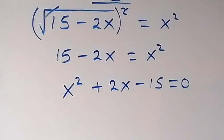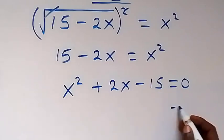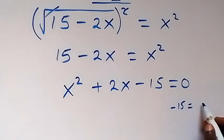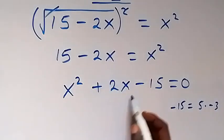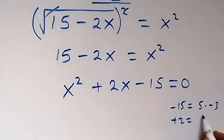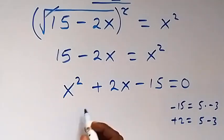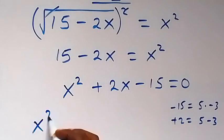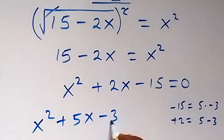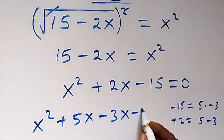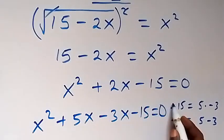We can solve this quadratic equation by factorizing. The product here, which is minus 15, can be written as 5 times minus 3. And also the sum here, which is plus 2, can be written as 5 plus minus 3. Then this quadratic equation becomes x squared plus 5x minus 3x minus 15 equals to 0.